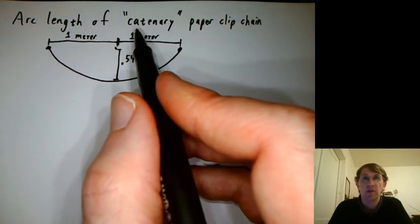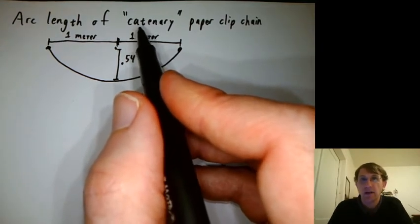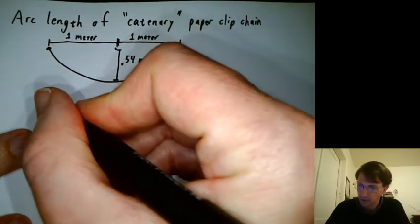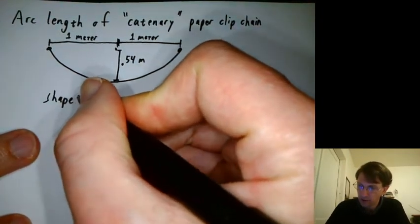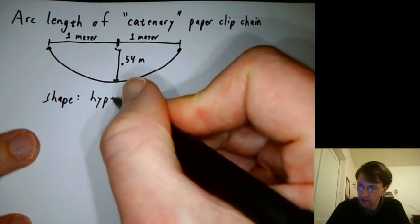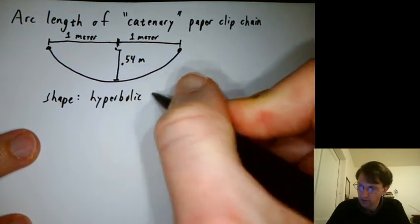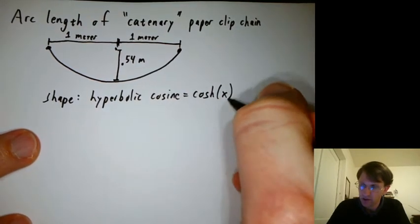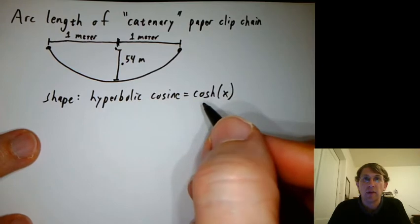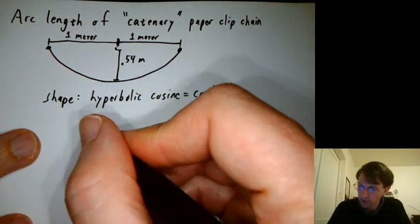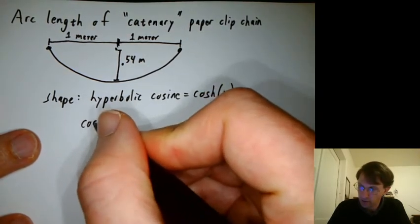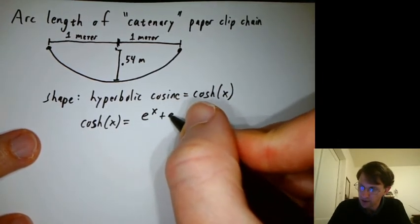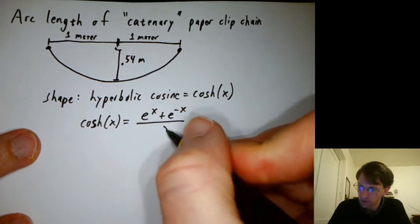And one name for this shape is a catenary. And what's a mathematical description of it? There's something called hyperbolic cosine, which is written cosh of x. And there's a nice formula for it, which you wouldn't expect for something with a fancy name. It's e to the x plus e to the negative x over 2.